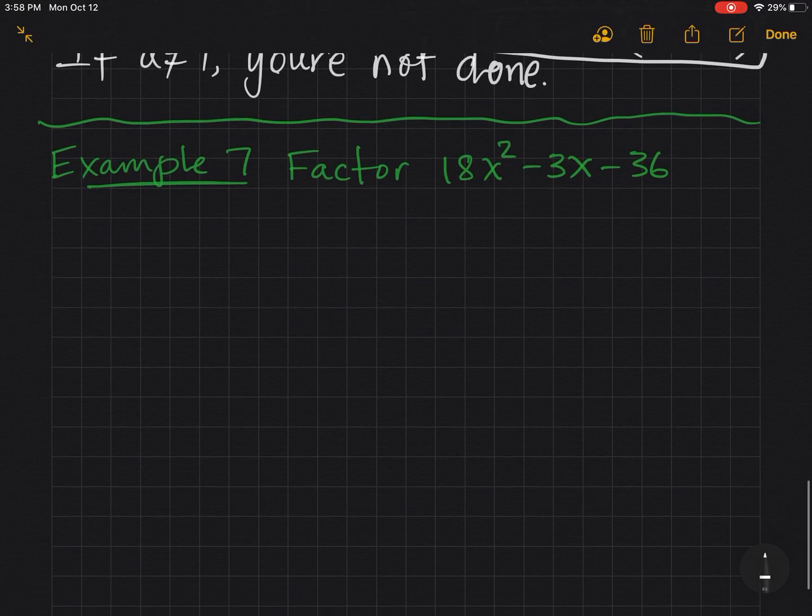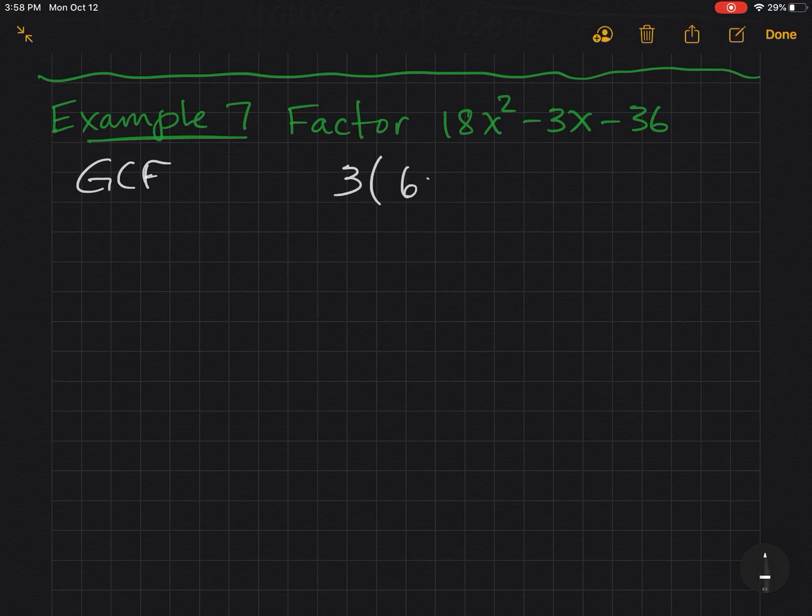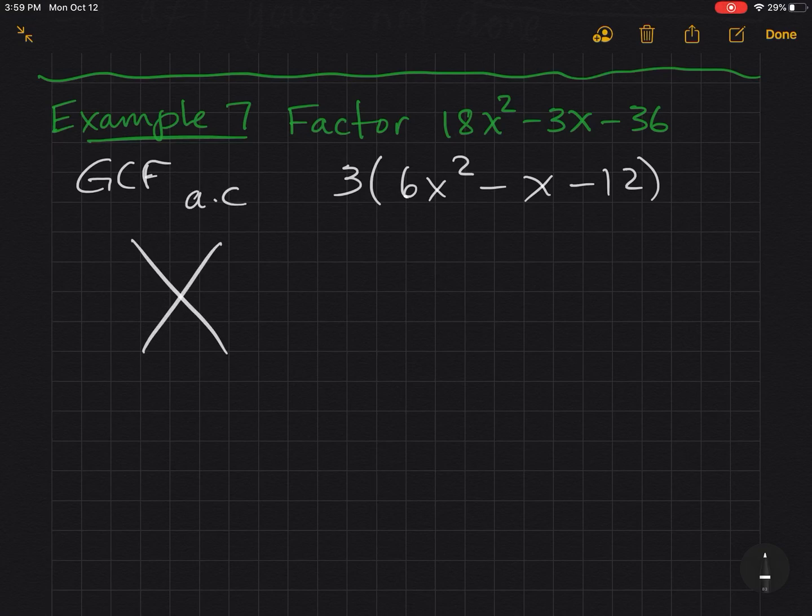Alrighty, final example. Give it a try on your own. See if you understood everything from this lesson. Okay, now I'm going to look for the GCF. There's no GCF that goes across. So, oh yes, there is. GCF is 3. So I can take 3 out. And I get 6x squared minus x minus 12. A is still not 1.